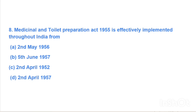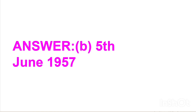Next question: Medicinal and Oil Preparation Act 1955 was effectively implemented throughout India from — Option A: 2nd May 1956, Option B: 5th June 1957, Option C: 2nd April 1952, Option D: 2nd April 1957. Answer is Option B, 5th June 1957.